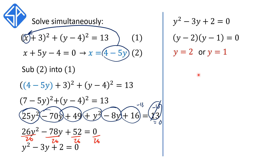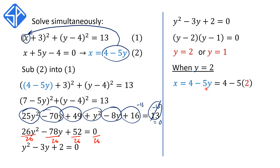Now that we have the values of y, we need to find the corresponding values of x. Starting with y equals 2: we substitute into x equals 4 minus 5y, replacing y with 2 to get 4 minus 5 times 2, which equals 4 minus 10, which is negative 6. So our first solution is x equals negative 6 and y equals 2.